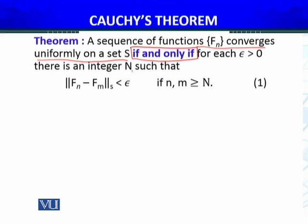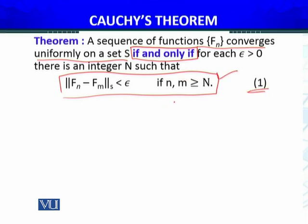यह necessary condition भी है और sufficient condition भी — both ways हम जाएंगे। If a sequence of functions converges uniformly, then the Cauchy criteria is satisfied। And if this criteria — the inequality — is satisfied, then the sequence of functions converges uniformly on the set S। So both ways हम इसको proof करेंगे।